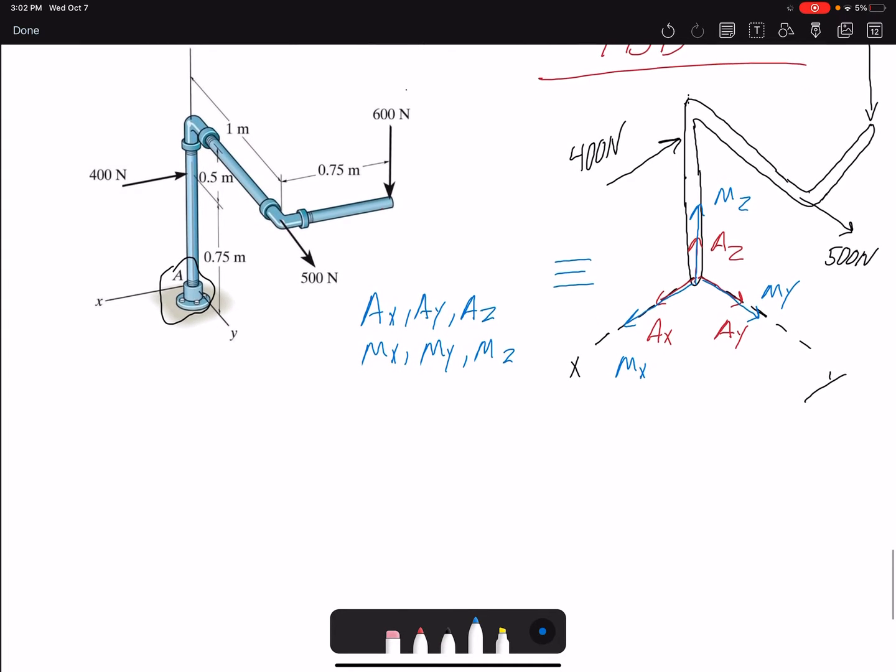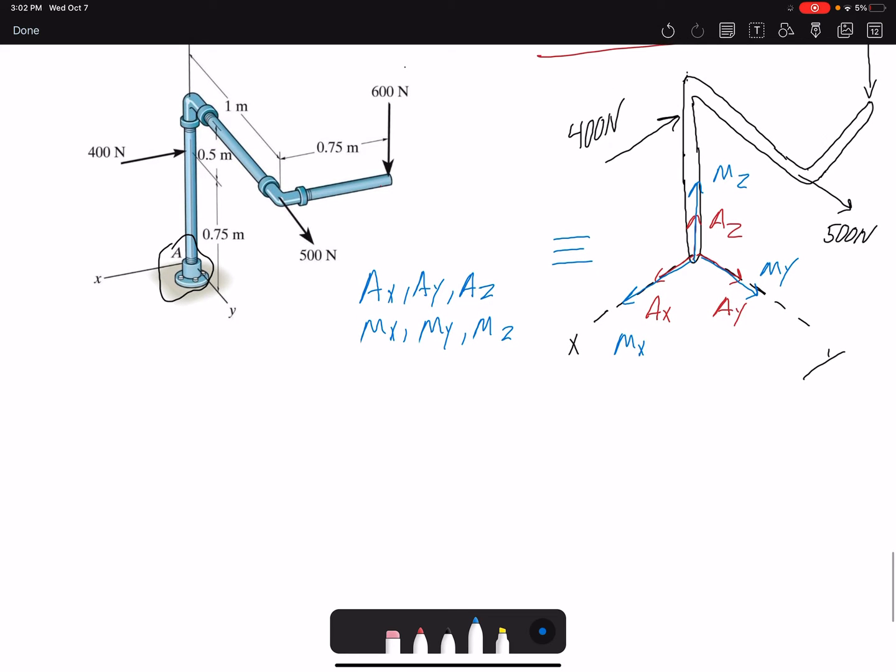In 3D rigid body equilibrium problems, I can write six equations: three force equations and three moment equations. Summation of forces in X equals zero: AX plus 400, which is in the opposite direction of X, so negative 400 equals zero. Therefore AX equals 400 newtons.